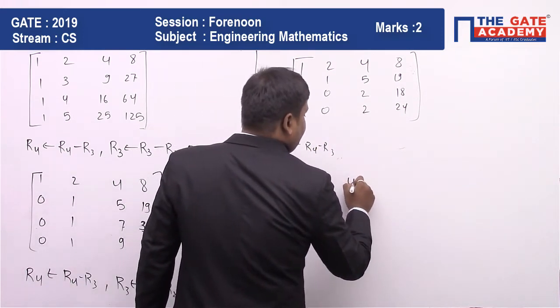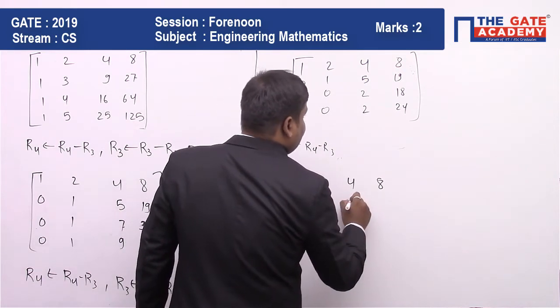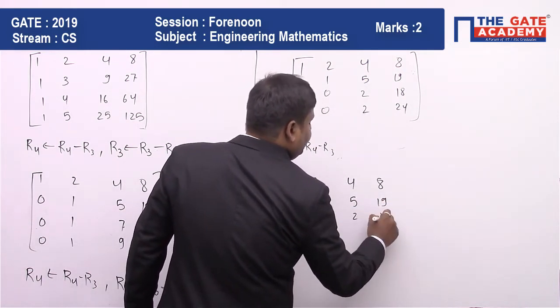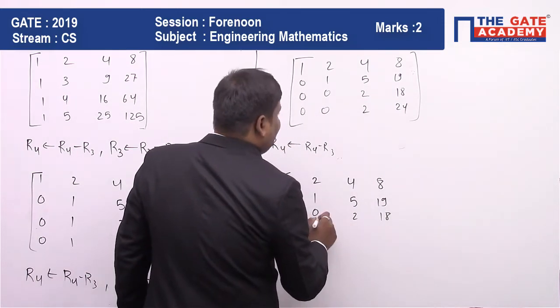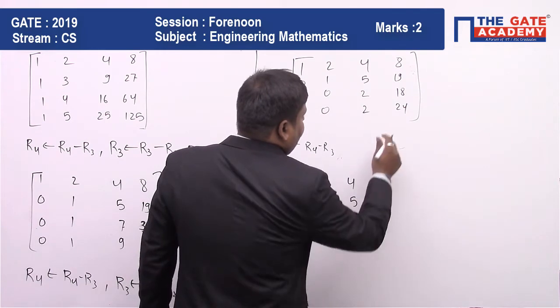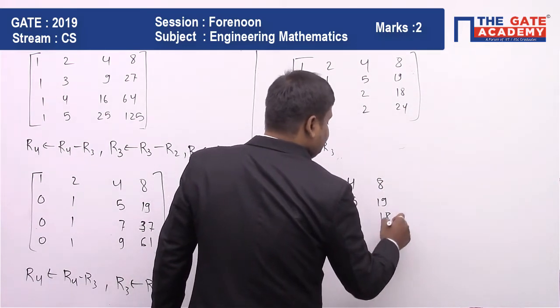The matrix becomes 1, 2, 4, 8; 0, 1, 5, 19; 0, 0, 2, 18. When I subtract the third row from the fourth row, it becomes 0, 0, 0, 6 (24 minus 18 equals 6).